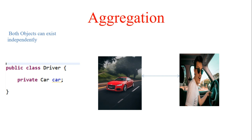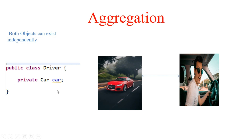In Java, you depict aggregation with a code snippet like this: inside the Driver class, you declare a private instance variable of type Car. This means you can create a Car object inside the Driver class. To access properties of Car — like its color or number of wheels — you create an object of Driver and then call driver.car.wheels or driver.car.color.